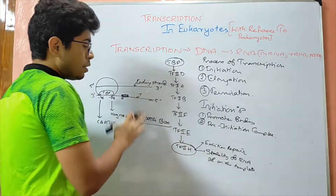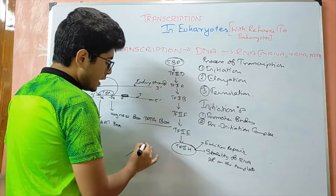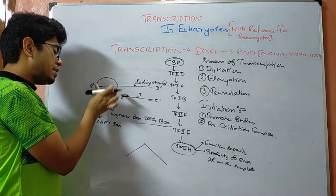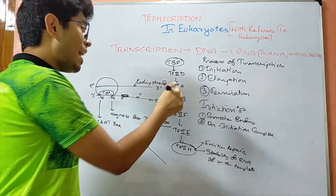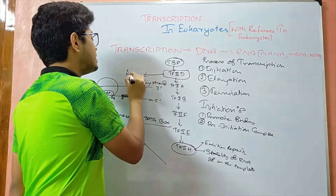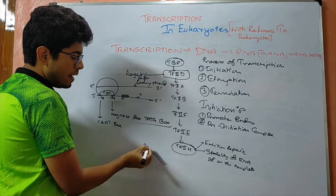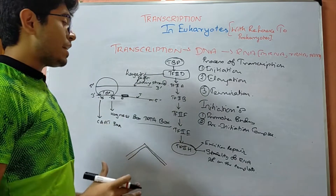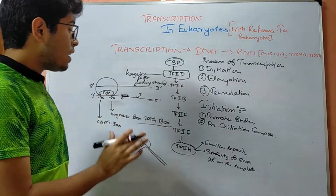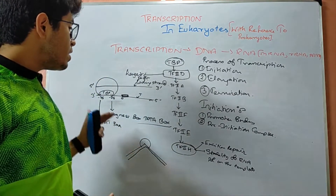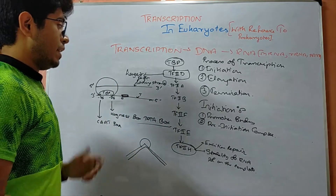After the pre-initiation complex has been formed, there is bending of the DNA molecule. When the TATA-binding protein and transcription factor IID — which is the largest transcription factor — bind, they cause bending of the DNA strand. This bending of the DNA strand is required for the other transcription factors to bind.